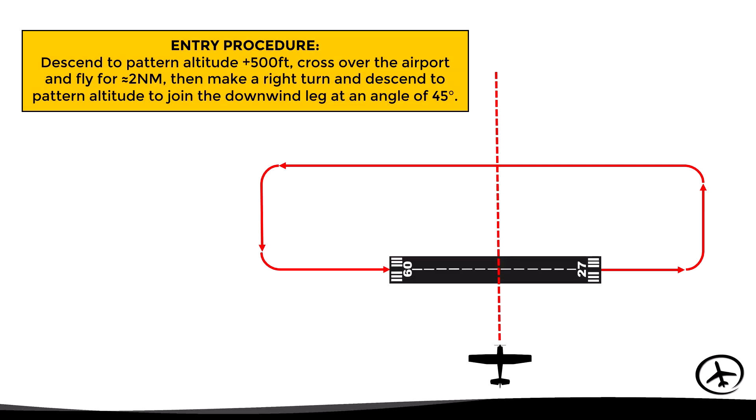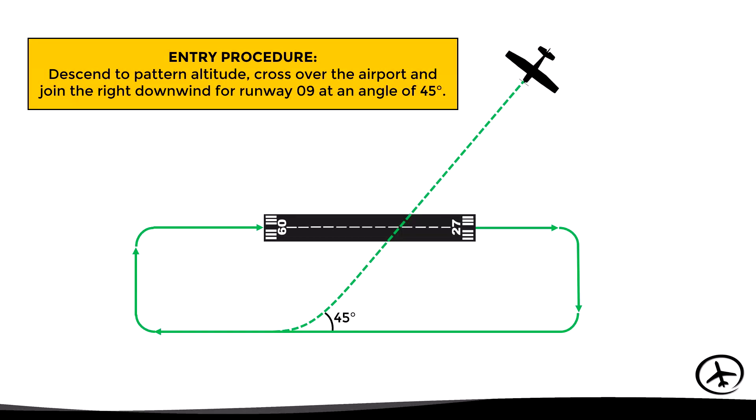Another option is to descend to pattern altitude plus 500 feet, cross over the airport, and fly for approximately two nautical miles — which is twice the pattern distance — then make a right turn while descending to pattern altitude to join the downwind leg at 45 degrees. This second procedure allows the pilot to look for other traffic in the pattern from above before joining it. For an aircraft wanting to join the right-hand pattern for runway 09, the procedure could be to descend to pattern altitude, cross over the airport, and directly join the right downwind at a 45-degree angle.